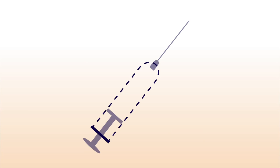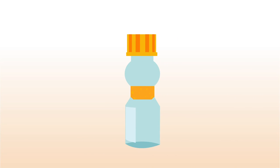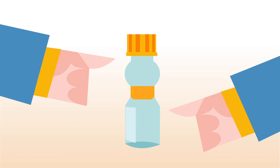This is how it works. First, prepare the injection with the Solicortef vial. The hydrocortisone comes in a two-chamber vial, with powder in the bottom and liquid in the top half.